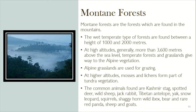At higher altitudes, mosses and lichens form part of tundra vegetation. The common animals found are Kashmir stag, spotted deer, wild sheep, jackrabbit, Tibetan antelope, yak, snow leopards, squirrels, shaggy horned wild ibex, red panda, and sheep and goats.